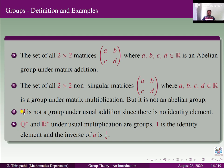The set of all natural numbers N is not a group under usual addition, since the identity element 0 does not belong to N. Similarly, Z is not a group under usual multiplication since 1/A doesn't belong to Z. However, Q* (non-zero rational numbers) and R* (non-zero real numbers) under usual multiplication are groups, because 1 is the identity element and the inverse of A is 1/A.